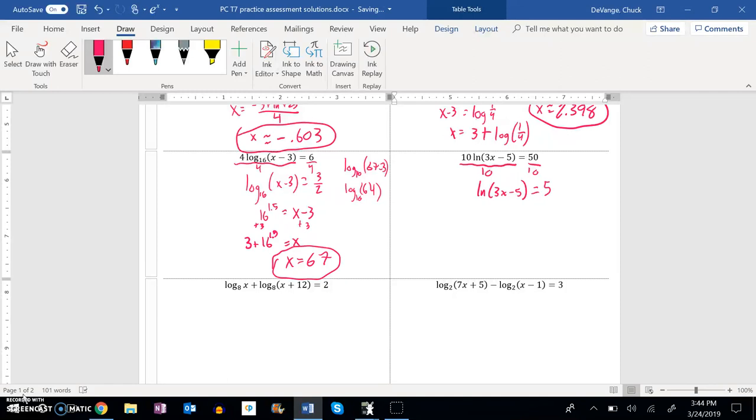And now let's rewrite this as an exponential statement. So natural log is log base e. So e to the fifth, e to the exponent, is 3x minus 5.